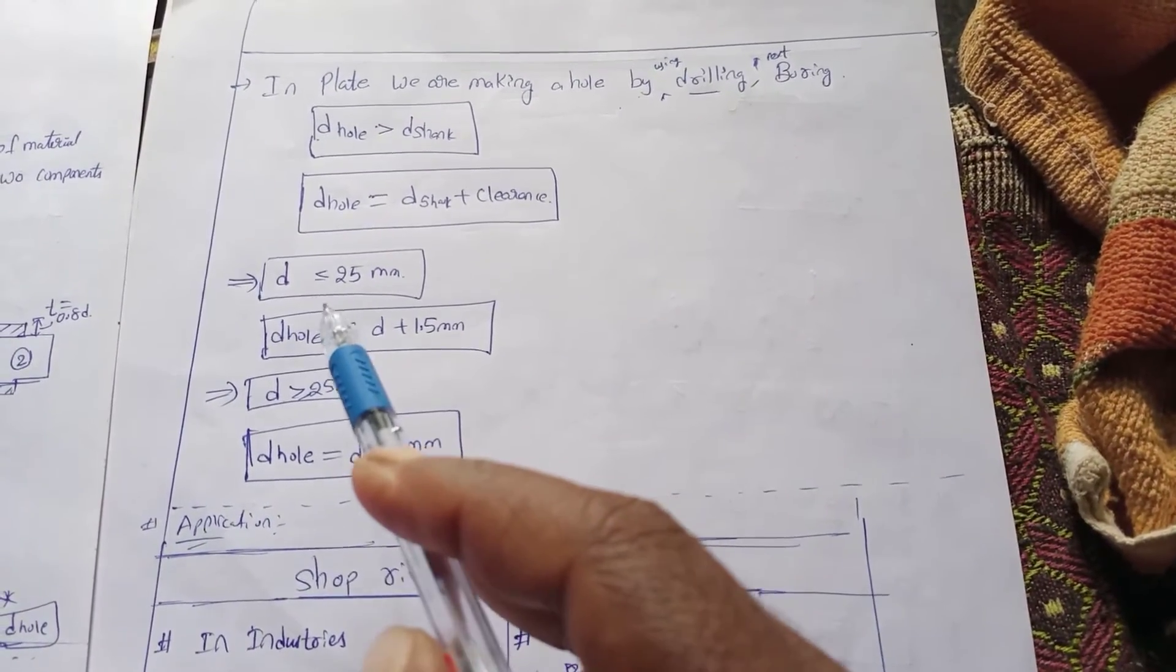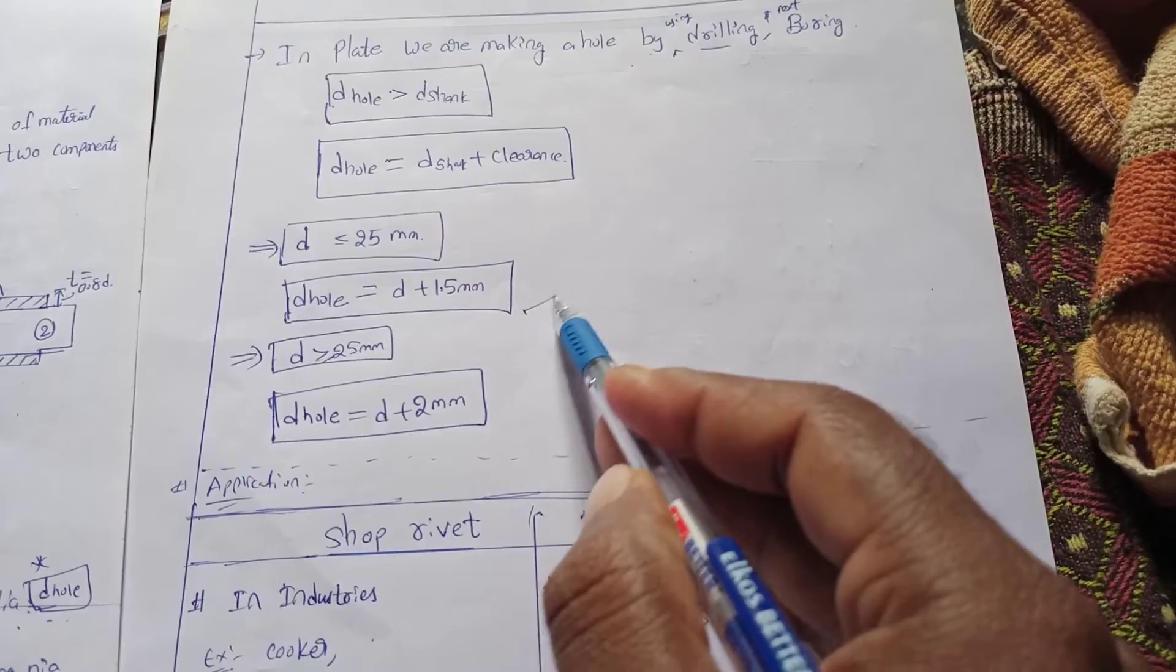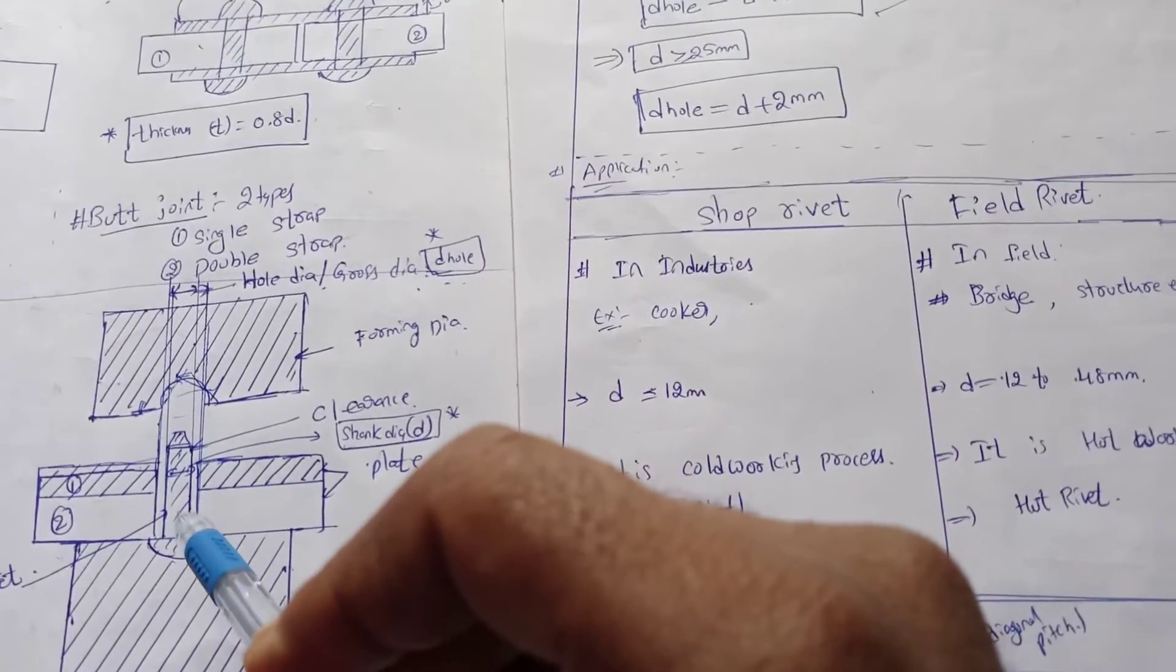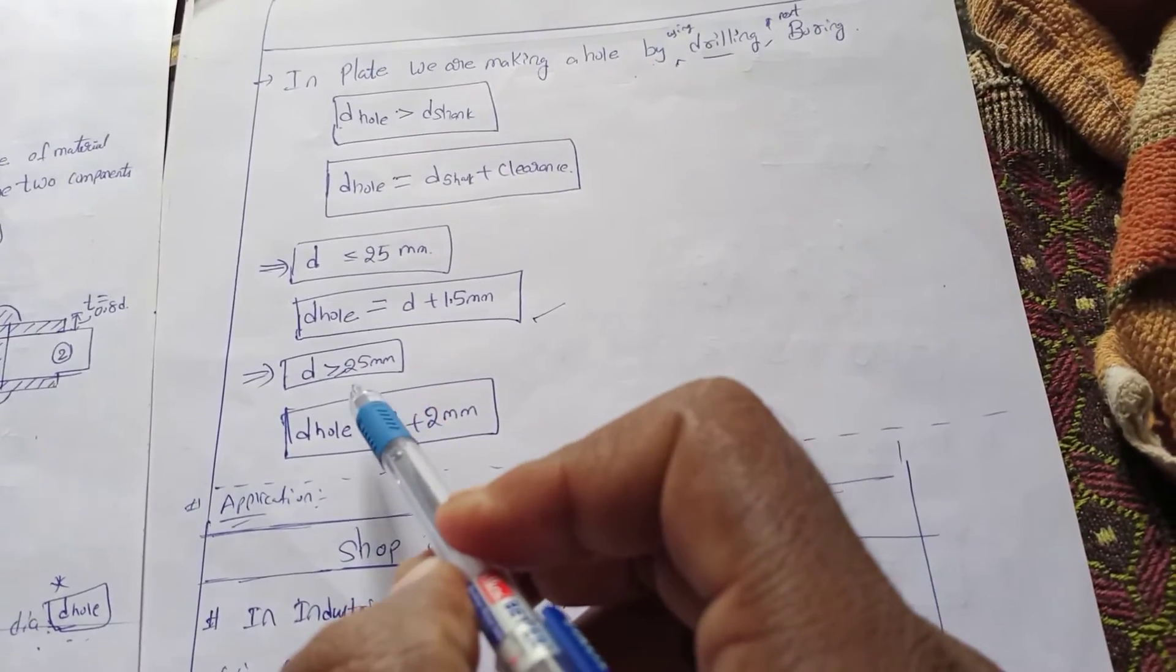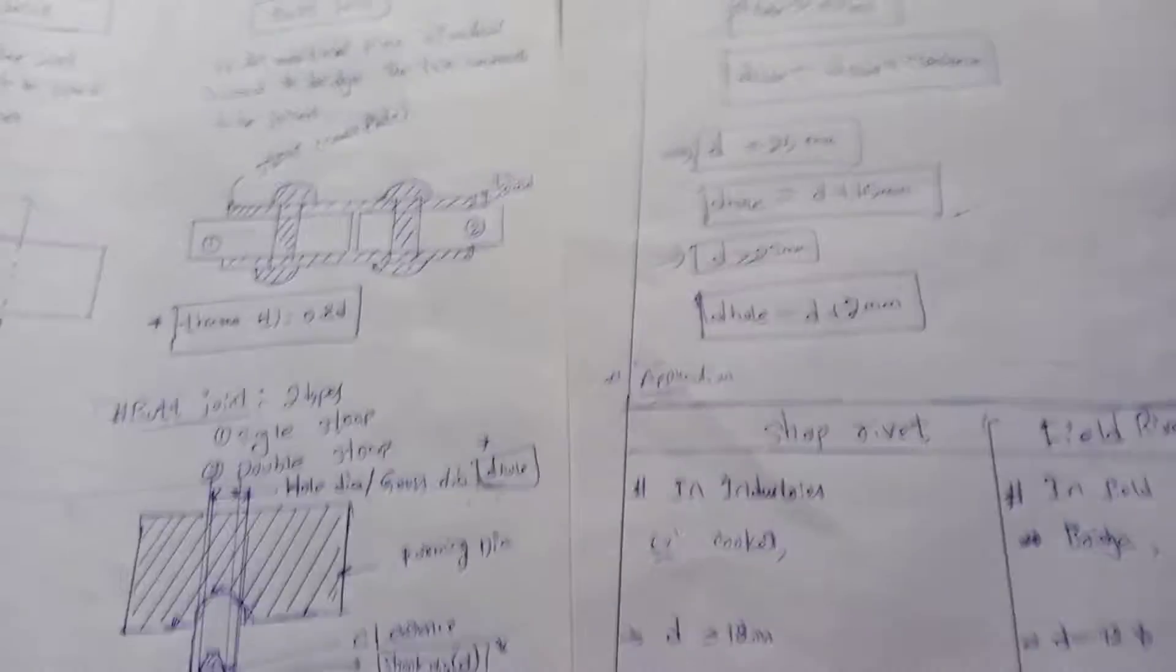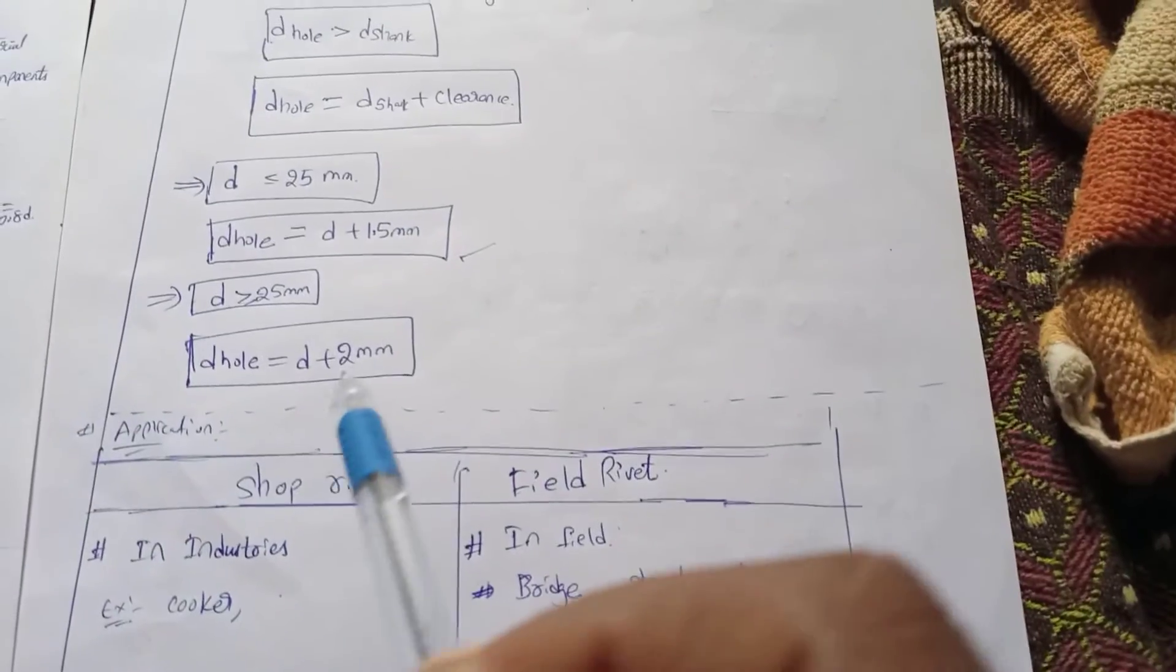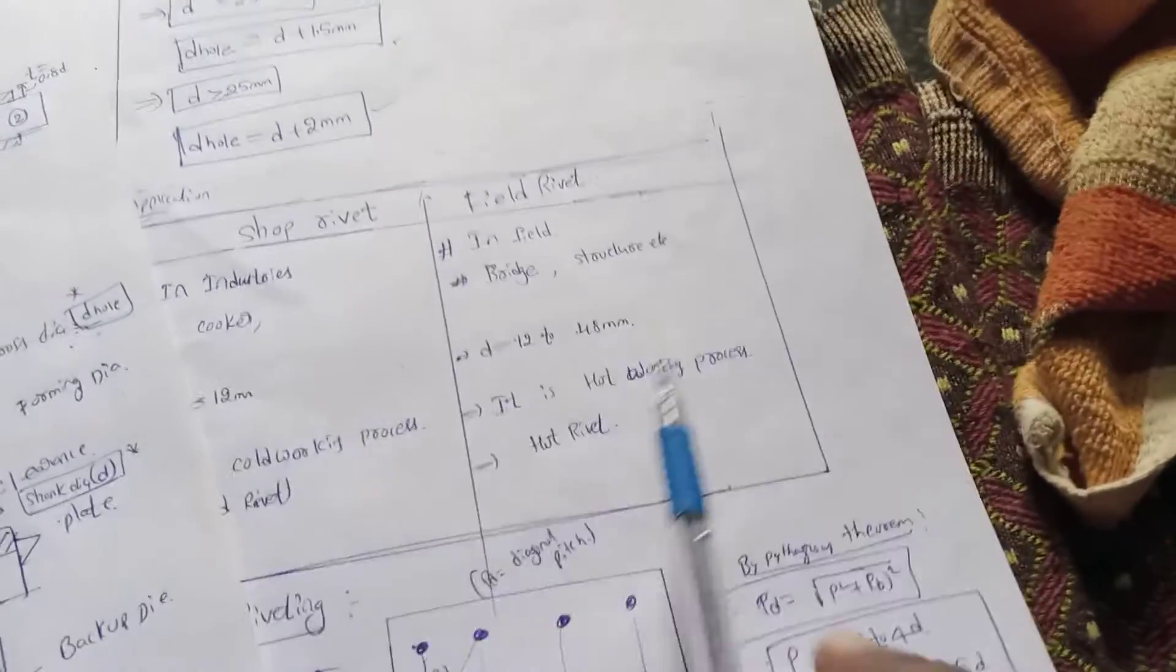If d is less than or equal to 25mm, then the formula is: d_hole = d + 1.5mm, where d is the shank diameter. If d is greater than 25mm, then d_hole = d + 2mm. This is the formula.